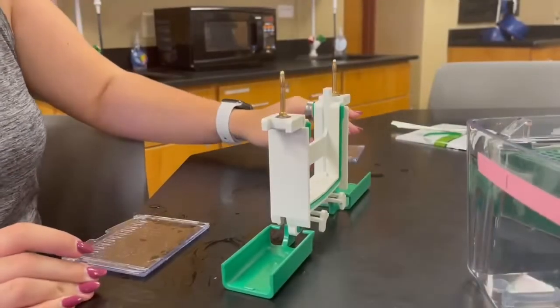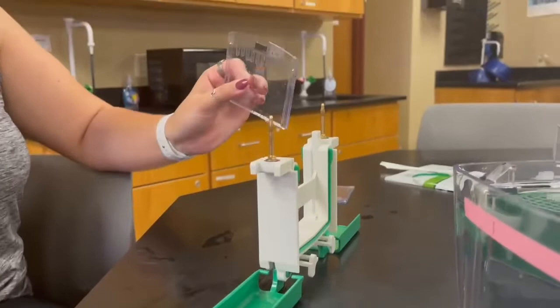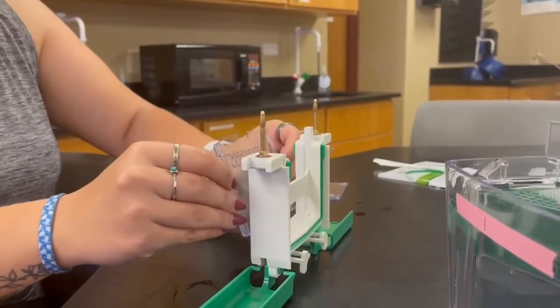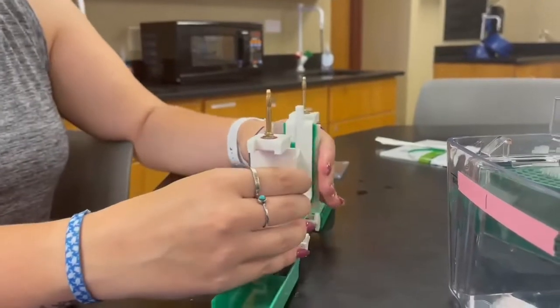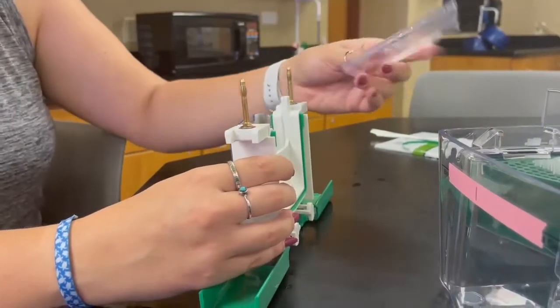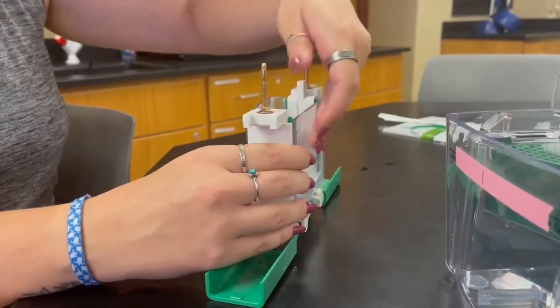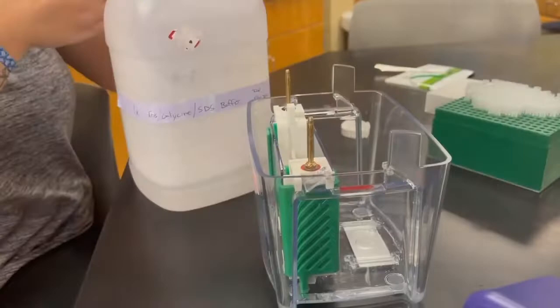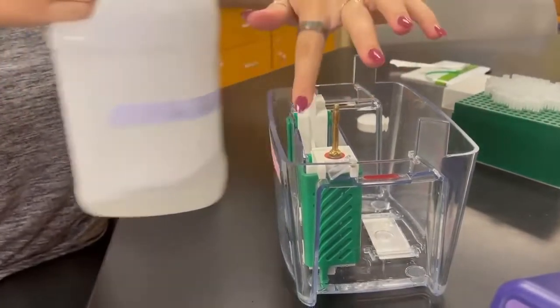So this is how we're going to run our SDS page test. This is the gel we are using to run our venoms and our saliva. We're going to put it on the one side, and then, since we're only running one gel, we're going to use a plastic from another gel that we ran to prevent leakage when we pour our buffer. So the next thing we're going to do is pour the buffer into these chambers.